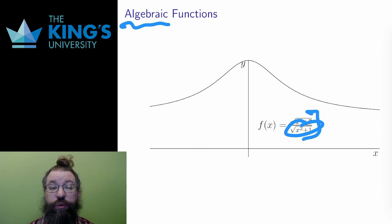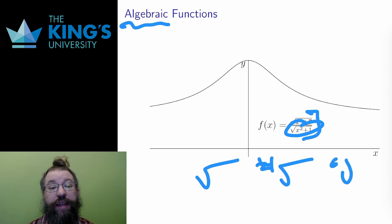I can't take an even root, a square root, a fourth root, a sixth root, of a negative number. Therefore, any expression inside an even root must be positive or zero.